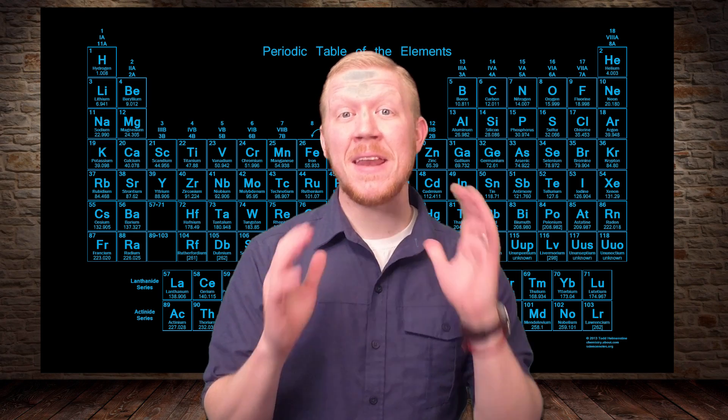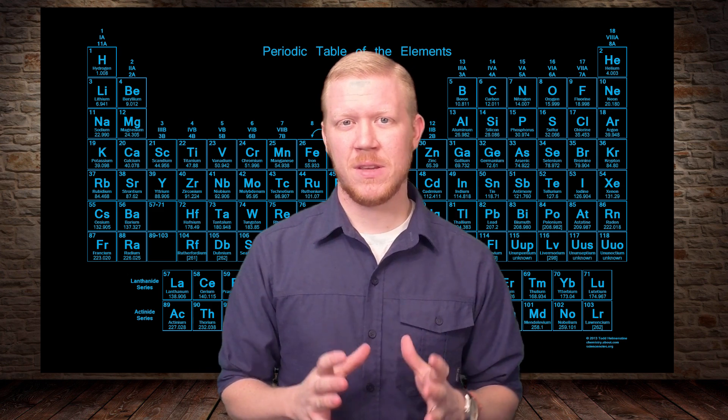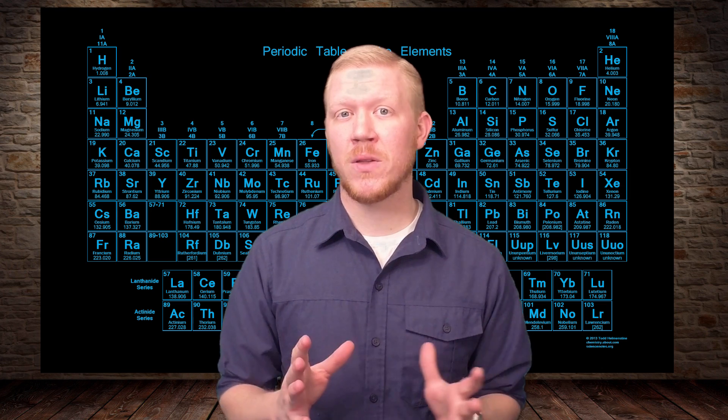There are 98 naturally occurring elements that make up everything you have ever seen. Each element has its own type of atom. These atoms are not all the same size due to the difference in the numbers of protons, neutrons, and electrons they contain.